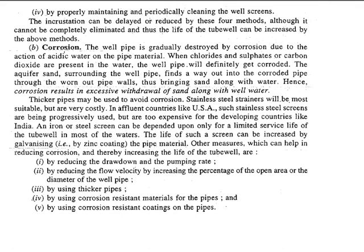The next cause of failure is the corrosion process. The well pipes used are prone to corrosion because they are exposed to acidic water, and when that comes in contact with metallic pipes, corrosion is a common process. Chlorides, sulfates, and carbon dioxide present in the water will cause the well pipes to corrode.